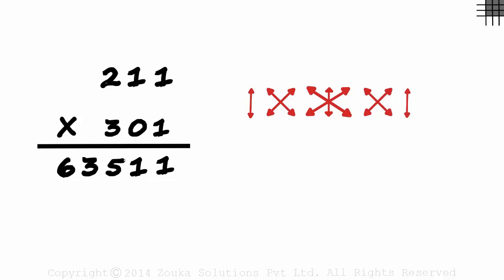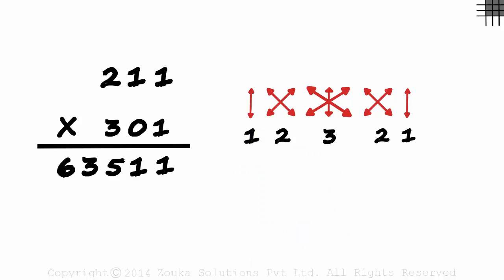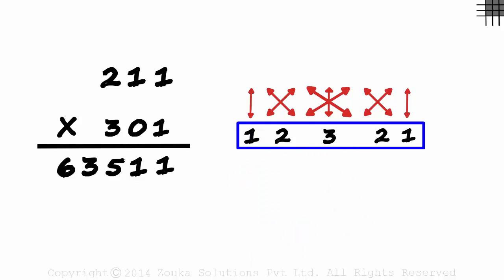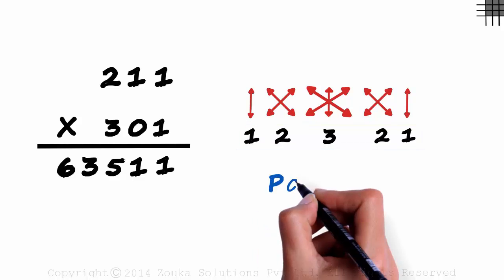Confused? You shouldn't be. Look at the pattern. One, two, three, two, one. We counted the number of arrows. Do you know what this pattern is called? It's called a palindrome.